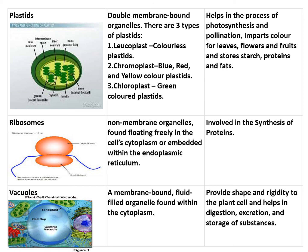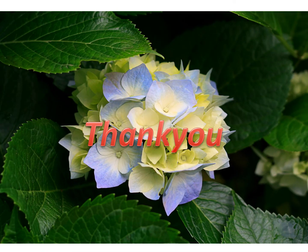Next are vacuoles. They are very large in plant cells, but in animal cells they are either not present or are very small. The vacuole is a membrane-bound, fluid-filled organelle found within the cytoplasm. It provides shape and rigidity to the plant cell and also helps in digestion, excretion, and storage of substances. That concludes today's session on cell organelles. We will meet again in the next session on plant and animal cells. Kindly learn the functions nicely. Have a nice day. Thank you.